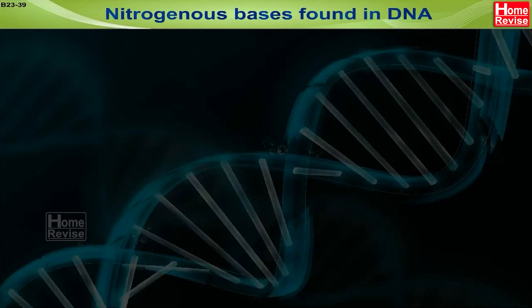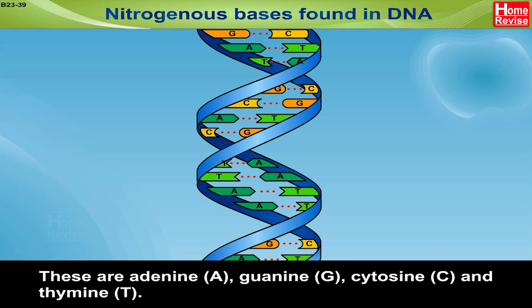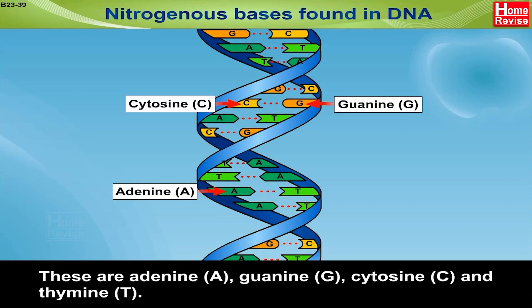Nitrogenous bases found in DNA: Four types of nitrogenous bases are found in DNA. These are adenine (A), guanine (G), cytosine (C), and thymine (T).